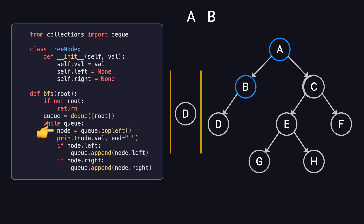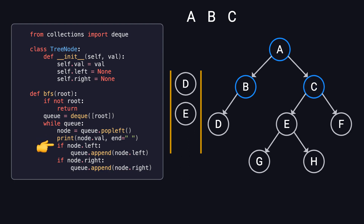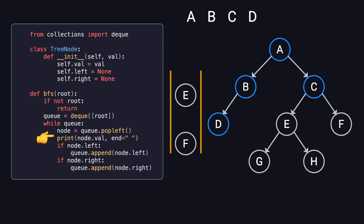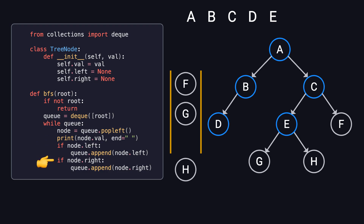Then, we dequeue C, visit it, and enqueue its children, E and F. Now the queue contains D, E, and F in that order. Moving forward, we dequeue D, visit it, and since it has no children, the queue remains the same. We then dequeue E, visit it, and enqueue its children, G and H. Now the queue contains F, G, and H.